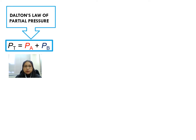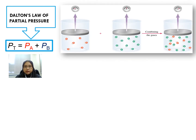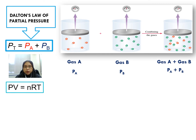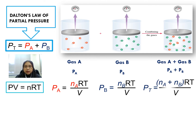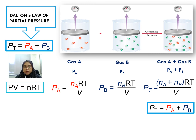Dalton's law gives us Pt equals to PA plus PB. Using PV equals to nRT, PA equals to NA RT over V and PB equals to NB RT over V. Pt can be calculated by summing (NA plus NB) RT over V, which gives us Pt equals to PA plus PB, confirming Dalton's law of partial pressure.